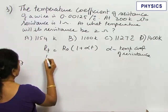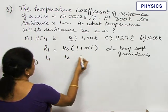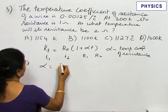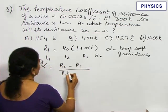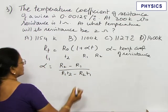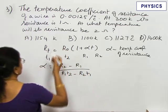If we have two different temperatures T1 and T2 and respectively the resistances are R1 and R2, then alpha equals R2 minus R1 by R1 T2 minus R2 T1. We are going to use this formula for this calculation.